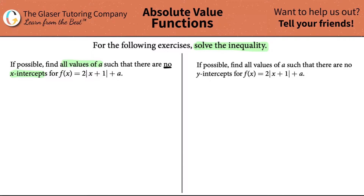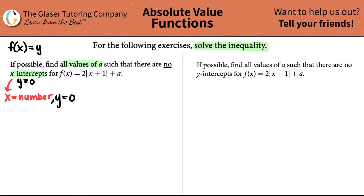So we want to find out where there are no x-intercepts. What is an x-intercept? An x-intercept is when x is a number — it means that y is 0. X-intercepts mean y is always equal to 0. And remember, f of x is a fancy way of just saying y. So I can rewrite this as y equals 2 times the absolute value of x plus 1 plus a.